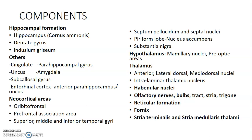Parts of the hypothalamus are also components of the limbic system, like the mammillary bodies and the preoptic nuclei. Parts of the thalamus including anterior, lateral dorsal, and mediodorsal nuclei, as well as intralaminar thalamic nuclei. We also have the habenular nuclei, olfactory nerves, bulbs, tracts, stria and trigone, reticular formation, the fornix, stria terminalis, and stria medullaris thalami.